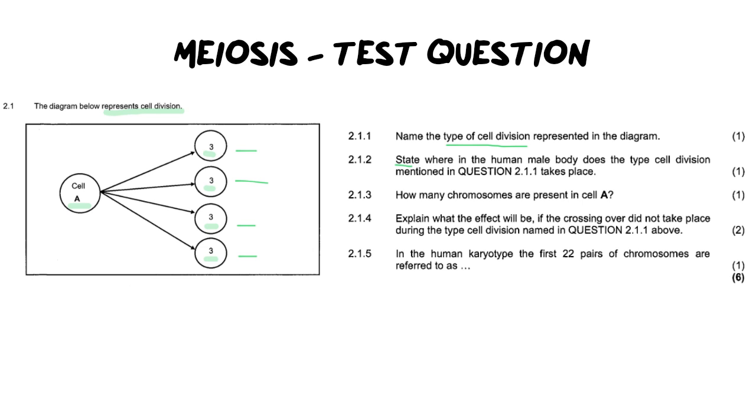Now the second question says state where in the human body does this type of cellular division take place and so they're referring to meiosis. Now hopefully at this point you have also done some information on the reproductive system because this is a small overlap but we would say the testes.